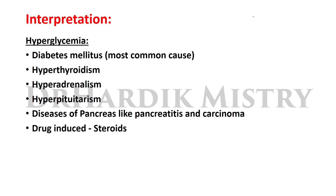Interpretation — causes of hyperglycemia: diabetes mellitus is the most common cause. Others include hyperthyroidism, hyperadrenalism, hyperpituitarism, diseases of the pancreas such as pancreatitis and carcinoma, and drug-induced causes such as steroids.